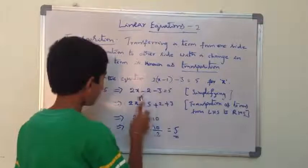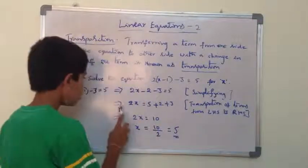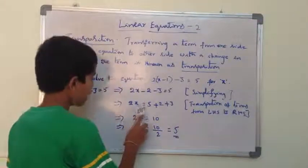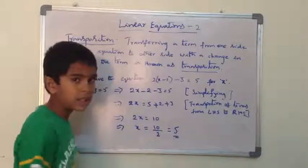Here, we simplify the LHS side. It implies 2x = 5+2+3.